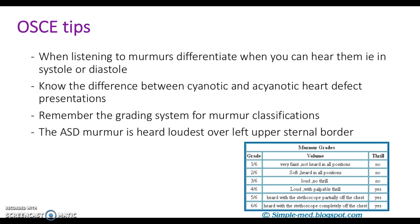There are six murmur grades. The first three have no thrill; the last three have thrills. Grade 1 is very faint and not heard in all positions — you need a lot of experience to hear it. Grade 2 is soft and heard in all positions. Grade 3 is loud but no thrill. Grade 4 is loud with a palpable thrill. Grade 5 is heard with a stethoscope partially off the chest with a thrill. Grade 6 is heard with the stethoscope completely off the chest with a thrill.